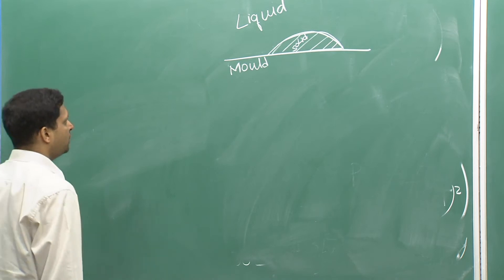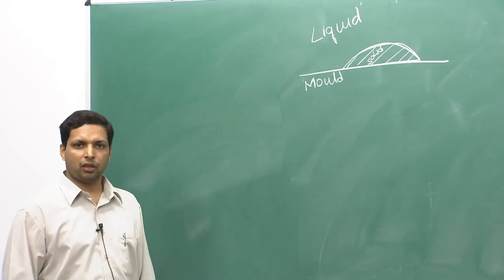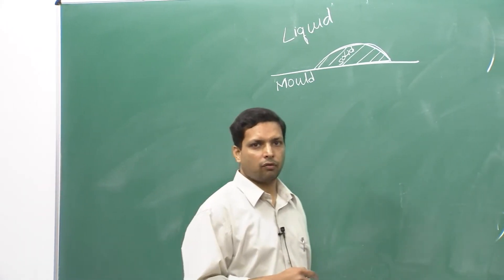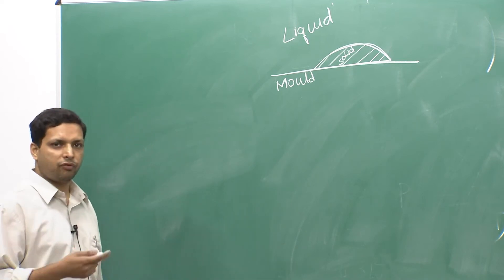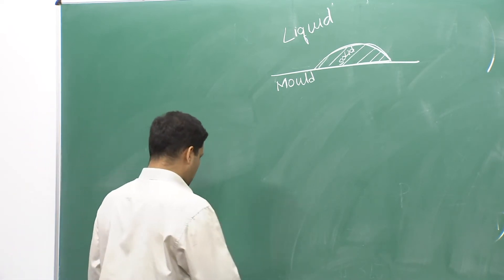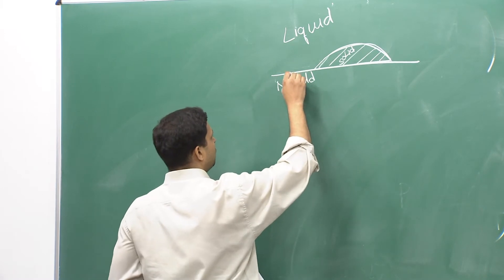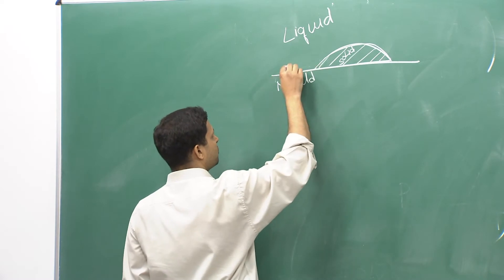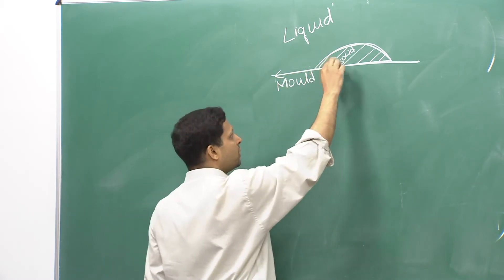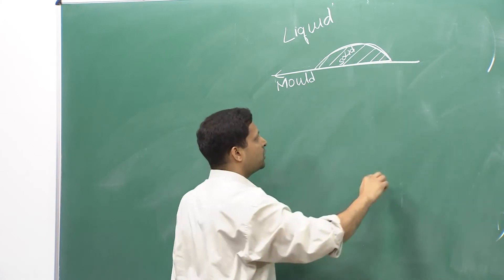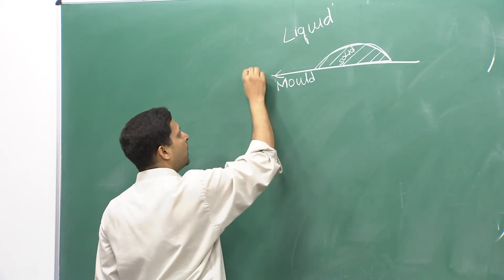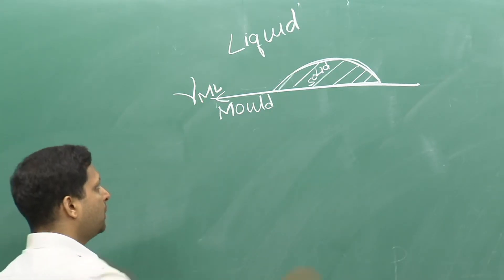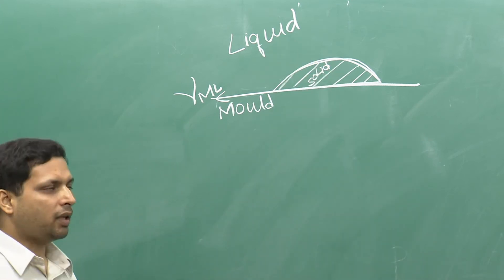Because of this, heterogeneous nucleation becomes much more probable and is the preferred route. To formulate the equations, we have three surface energy terms: γ_ML between mold and liquid, γ_SL between solid and liquid, and γ_SM between solid and mold. The contact angle at this triple point is θ.